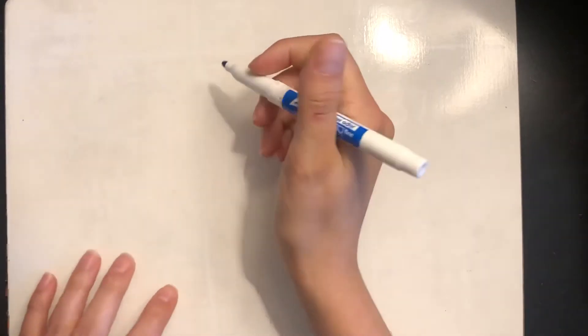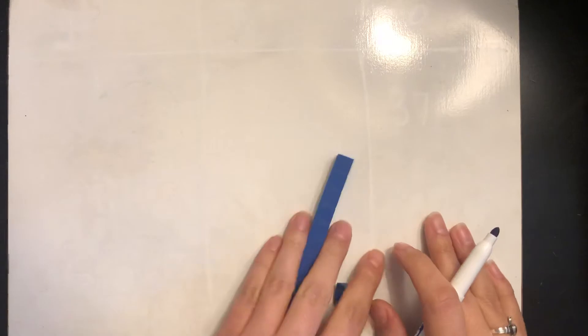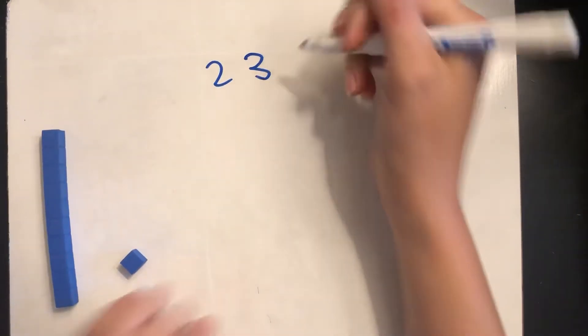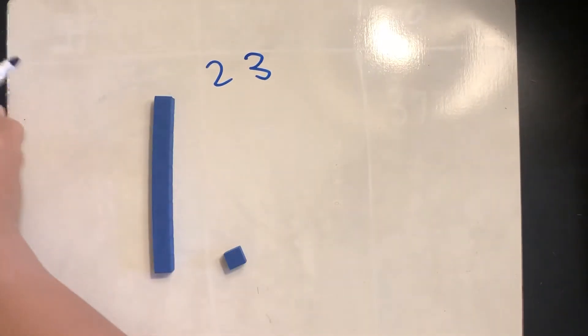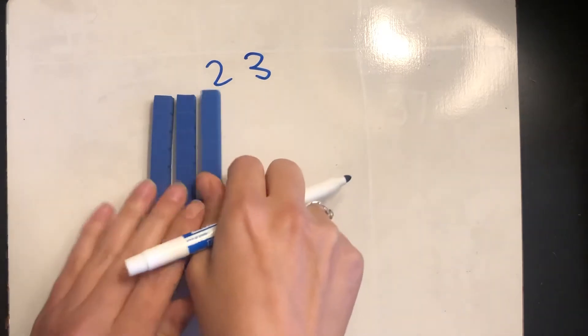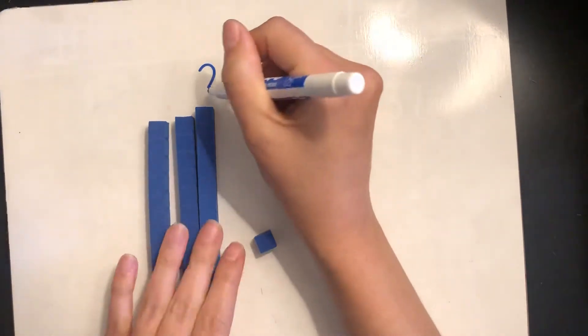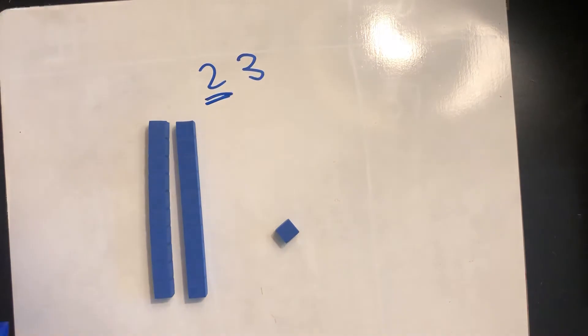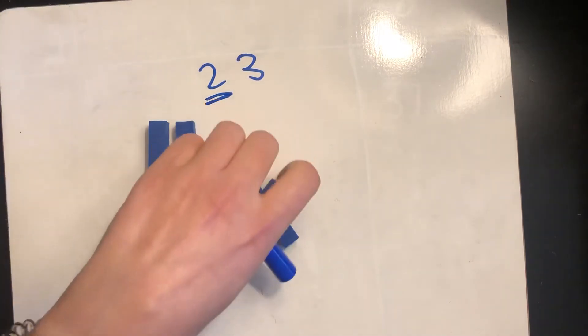Hello class. So this week we have been working on building two-digit numbers using tens and ones. So like for the number 23, we know that that is two tens and three ones.